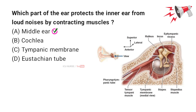When exposed to loud sounds, these muscles tighten. This reduces the movement of the ossicles, lowering the sound transmission to the inner ear. This reflex helps protect the inner ear from damage caused by loud noises.